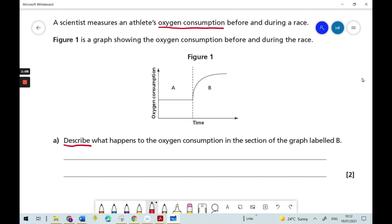Now let's have a closer look at the graph. We're told that the graph is showing the oxygen consumption before and during the race, and we've got time on the x-axis and oxygen consumption on the y-axis. We can see in this first part of the graph, part A, the line here is level, and that's telling us that the oxygen consumption is not changing. Therefore, that's likely to be when the race hasn't even begun and the athlete is at rest.